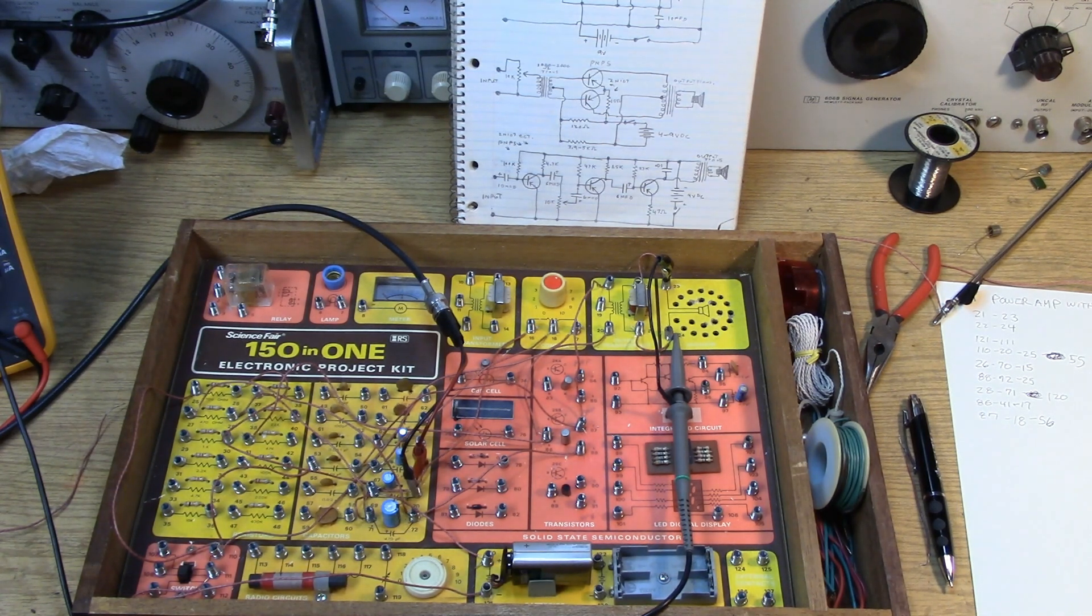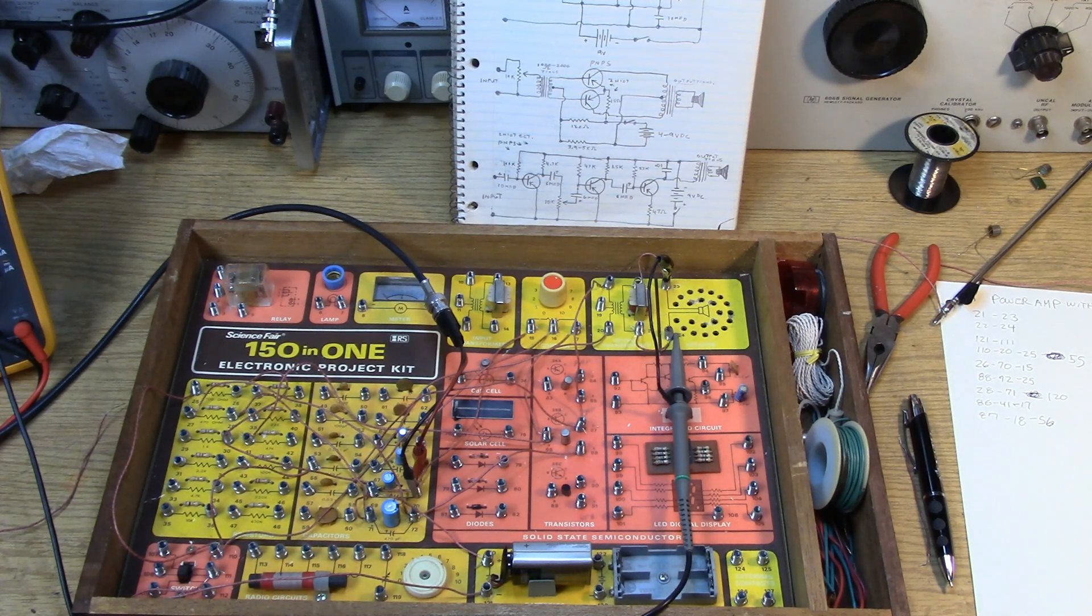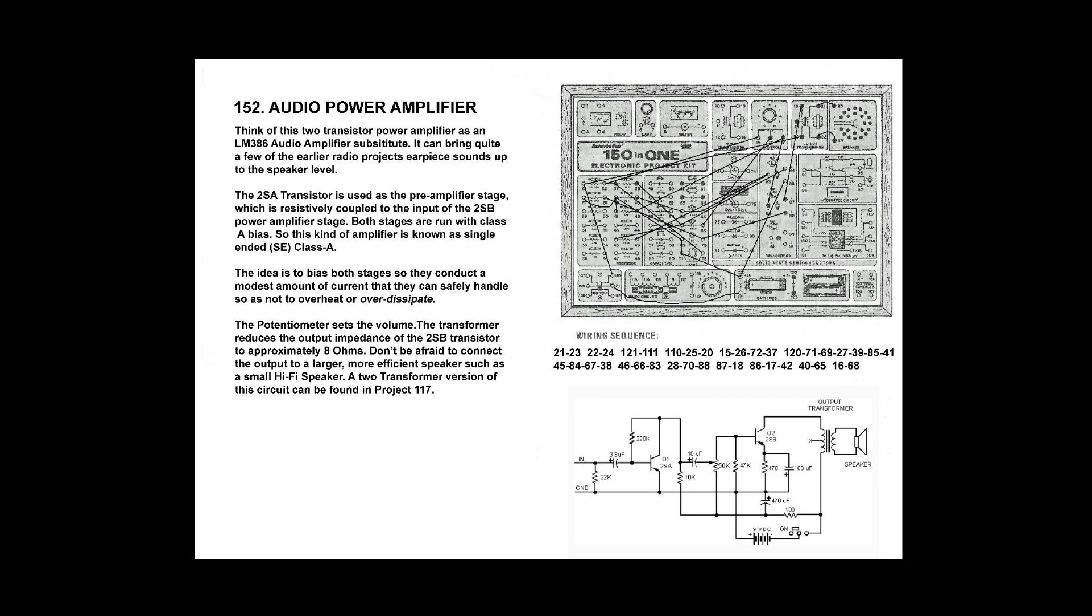It'll have enough gain to drive the speaker. So this power amplifier, this audio power amplifier, represents Project 152. Project 152 will be a general-purpose power amplifier. So have a little mercy on me here with the actual wiring sequence and the wires drawn on the plaque. The schematic, of course, is correct, but I didn't spend a lot of time working on the documentation. There might be some errors.